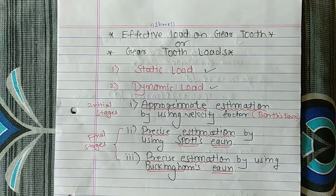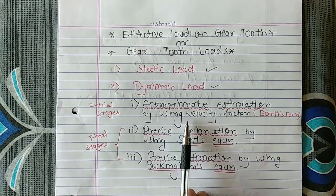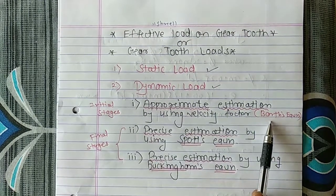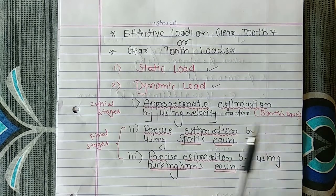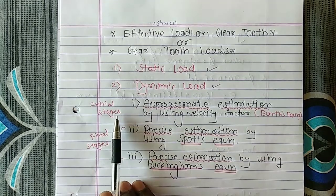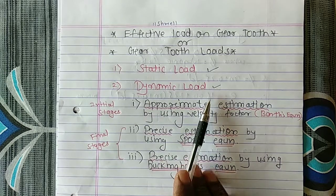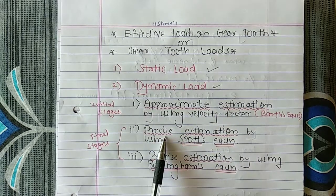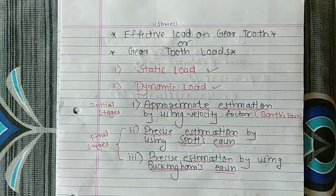Hello everyone. Just now we have seen the approximate estimation by using the velocity factor, that is by using Barth's equation, which is used in the initial stages of gear design. Now we will see how to calculate the dynamic load by using precise estimation, that is nothing but by using Spott's equation.